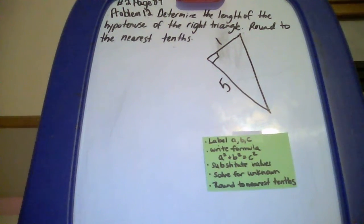Number 2, page 89, problem 12. Determine the length of the hypotenuse of the right triangle, round to the nearest tenths.